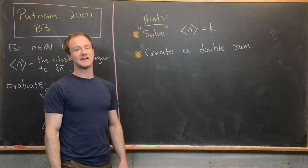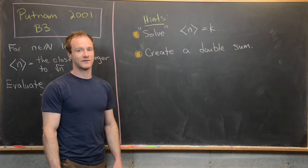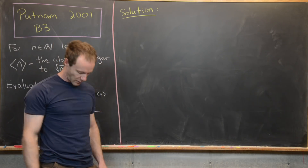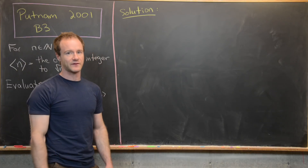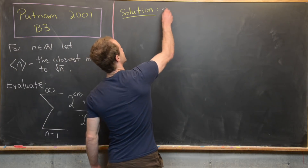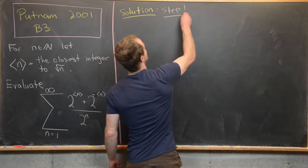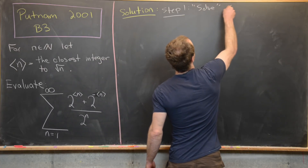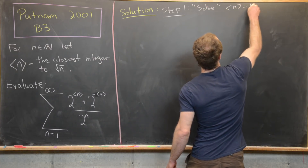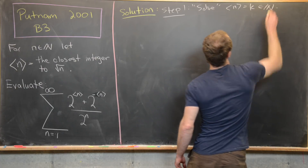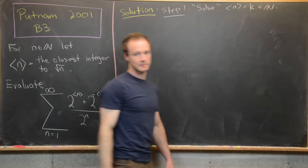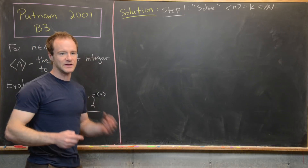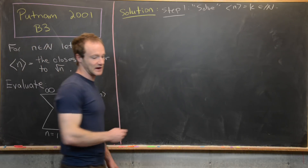Hopefully you were able to try the problem with those hints and make some good headway. Now we're ready to look for a solution. Step one is to solve the equation angle bracket n equals k, where k is a natural number. I want to do this by looking at it on a number line and then using some argument involving inequalities on that number line.